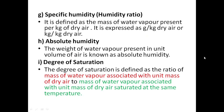Specific humidity, also known as humidity ratio, is defined as mass of water vapor per kg of dry air — expressed as grams per kilogram of dry air or kg per kg of dry air. Absolute humidity is the weight of water vapor present in unit volume of air, i.e., per one cubic meter of air.